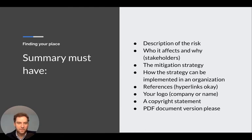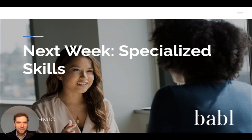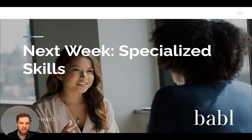I want you to put your logo on this — whether you have your own company or it's just your name — and think about this as a product. It's a one or two page summary of a risk for a particular system, and if you're right, it's a valuable document. Put a copyright on it; this is your research and your intellectual property. Produce a PDF document — it doesn't have to look beautiful, but package it properly. Submit it via the Google Form and we'll take a look at it. Next week we're going to start talking about specialized skills, which are really useful and important for AI ethics and governance consulting.